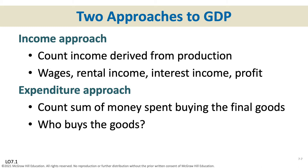There are two approaches to calculating GDP, but you get the same answer either way. The income approach calculates GDP by counting up all the income earned in the production of goods and services. The expenditures approach calculates GDP by adding up all the money spent to purchase those goods and services. Some people earned wages, rent, interest, and profits producing the GDP — we can count all of that, or count the money spent to purchase it. The answer is the same regardless of which approach we use.